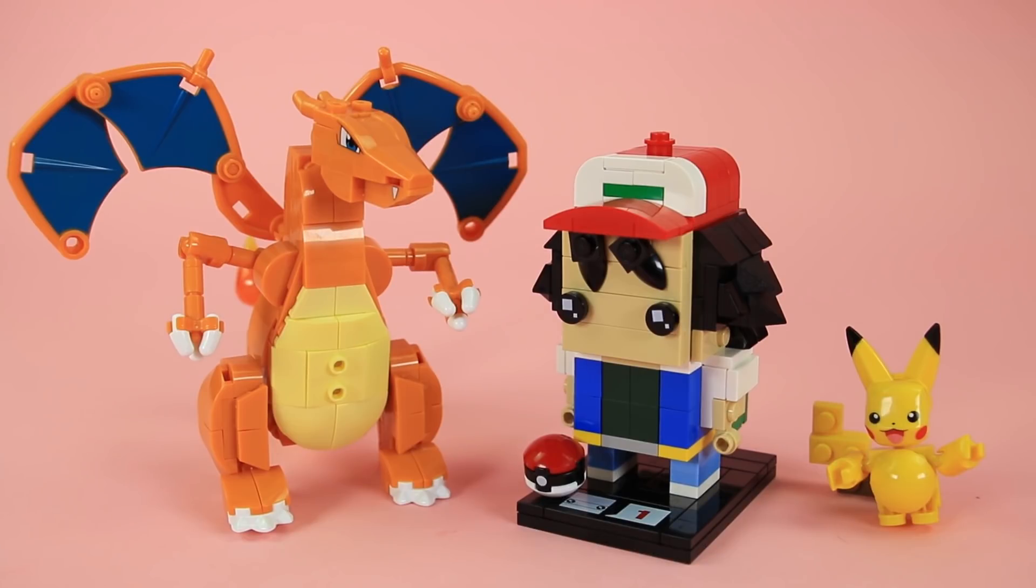And if you build this you can also set it next to some of the Mega Constructs Pokemon sets. And they actually go pretty well together. Ash is obviously a ridiculous looking character as a brick head. But he is kind of almost to scale here with those Pokemon. So yeah. That's just a fun thing you could do to fill out your Pokemon centric shelf.